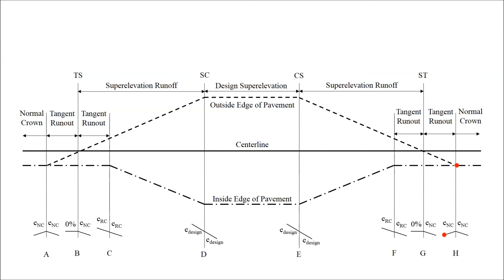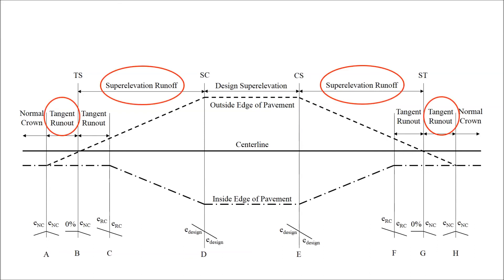The distance from point G to point H is the tangent runout length. The inside edge of pavement is below the center line at the same relative elevation as normal crown and will not undergo any further rotation. As with point A, the outside edge of pavement is at normal crown at point H and is lower than the center line. The inside edge of pavement is also lower than the center line at point H. The overall transition distance from normal crown to design superelevation consists of two lengths — tangent runout and superelevation runoff — for a horizontal curve that turns to the right moving from point A through point H.